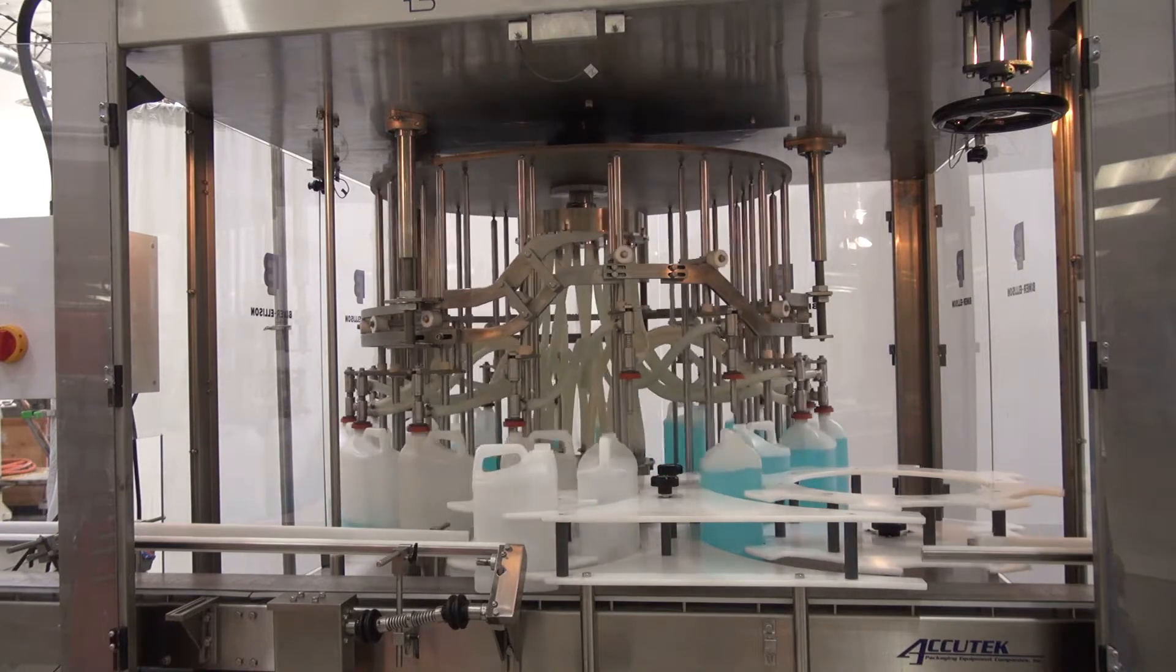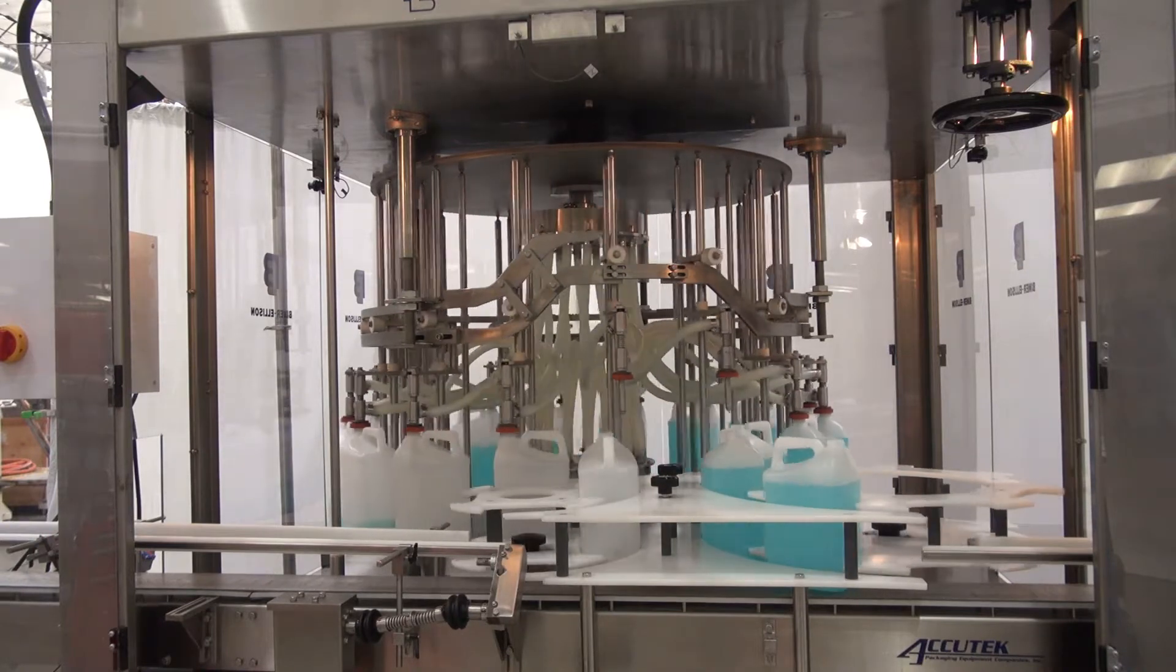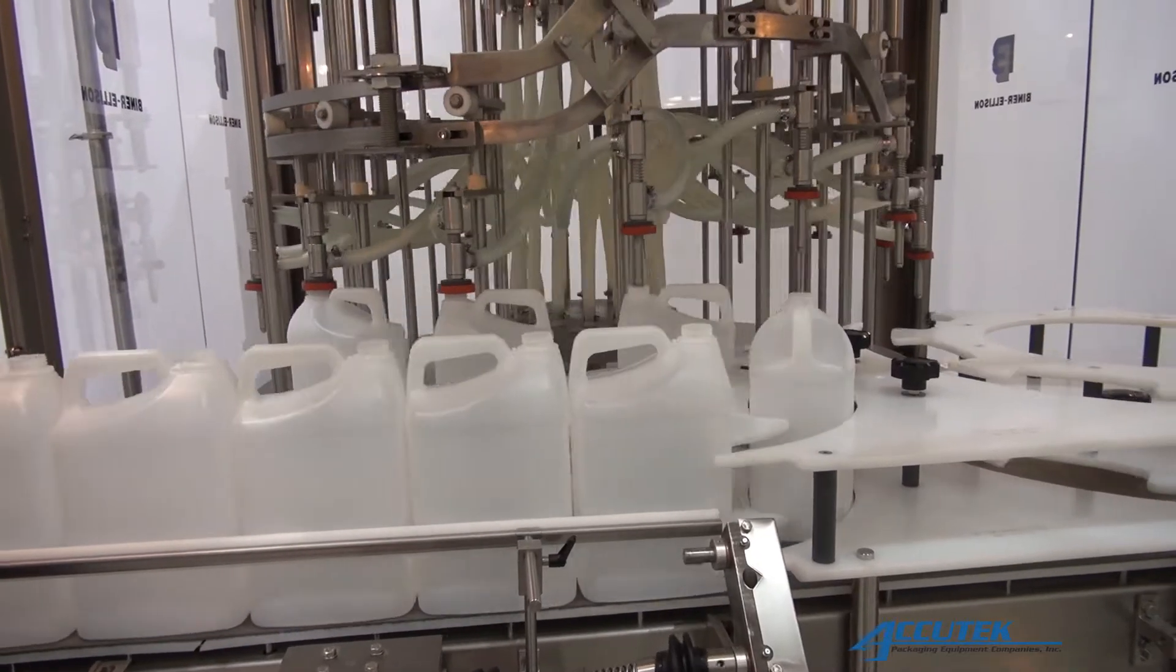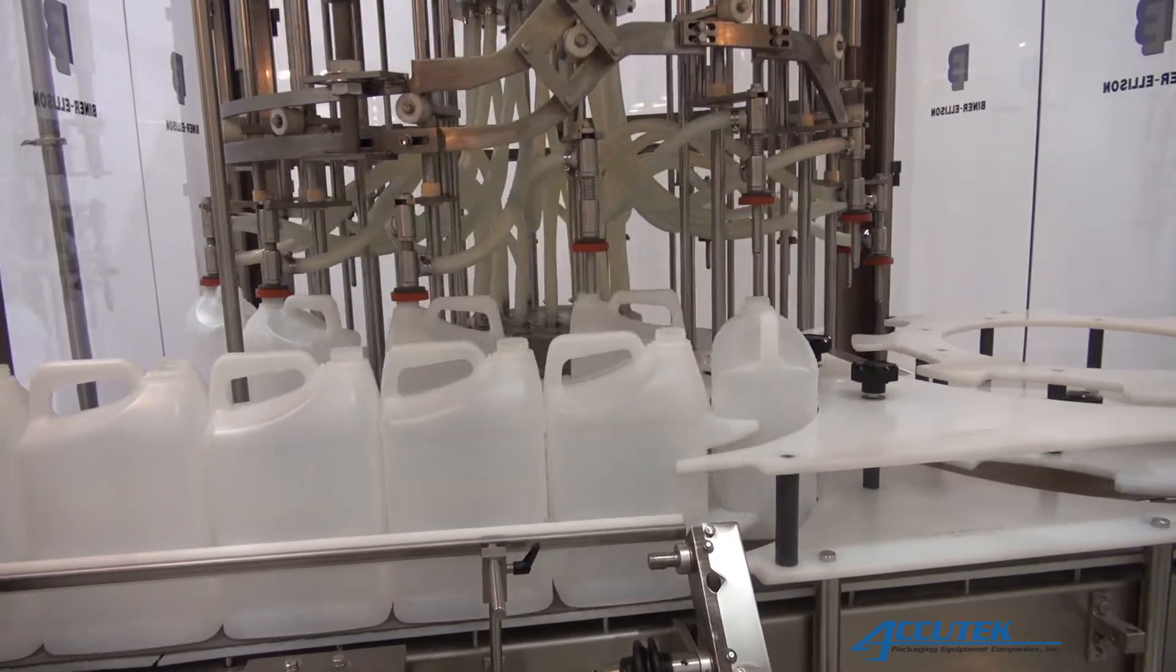One unique feature to note on Biner Ellison's Rotary Overflow Filling machines is that the power transmission for the main turret and feed and outfeed star wheels as well as the timing screw is positioned on top of the machine for easy maintenance.